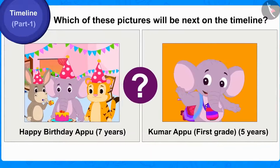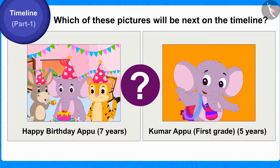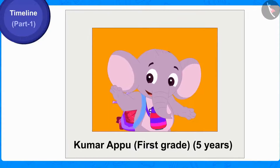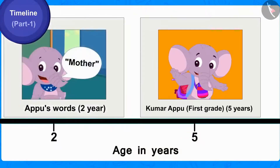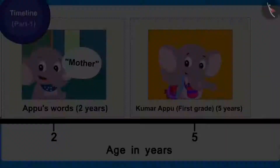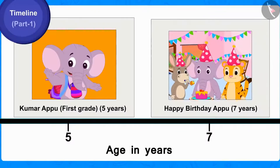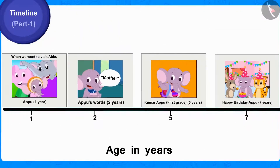And which of these pictures will be next on the timeline? This picture of Appu, in which Appu was in first grade, will be shown chronologically next on the timeline by writing the age of five years on it. And finally, the picture of Appu's 7th birthday will be shown by writing the age of seven years on the timeline. In this way, Appu's timeline is ready!